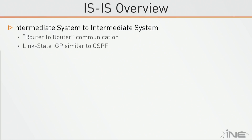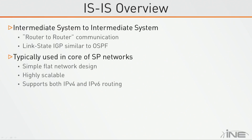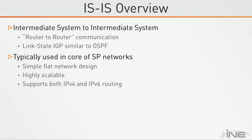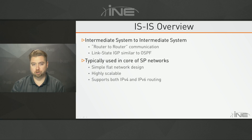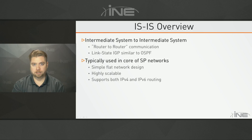IS-IS is link-state, similar to OSPF. In typical designs, it's used in the core of service provider networks because it is a very simple flat network design—you don't need to worry about the hierarchy that OSPF imposes. It also supports both IPv4 and IPv6 routing within the same protocol stack. In OSPF, those are two separate protocols: OSPF version two and OSPF version three. In IS-IS, IPv4 and IPv6 routing are extensions to the core protocol—the same reason FabricPath and overlay transport virtualization use IS-IS, by writing custom extensions to advertise their specific link values.